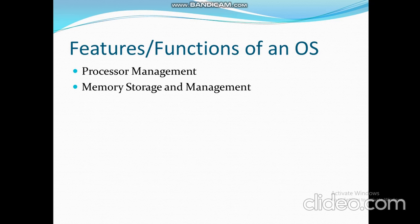Next is memory storage and management. An operating system manages the sharing of internal memory among multiple applications. An operating system must make efficient utilization of different types of memory — for example, RAM, cache, etc. — within the system, so as to ensure proper execution of every process.